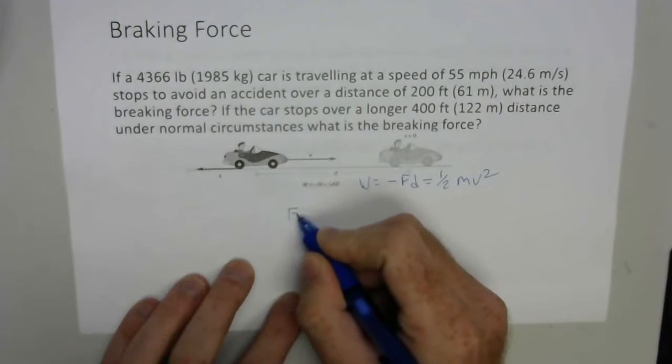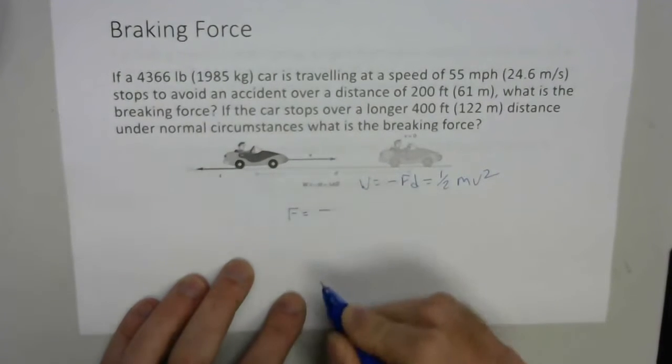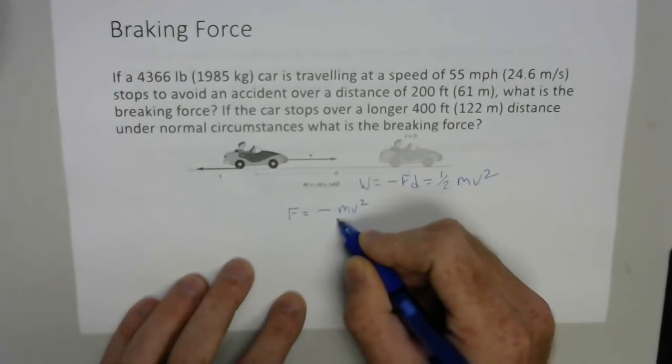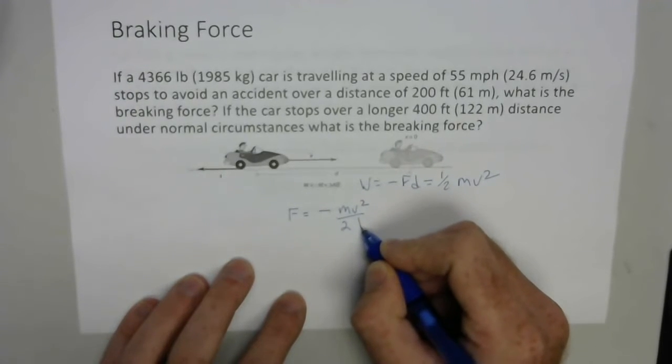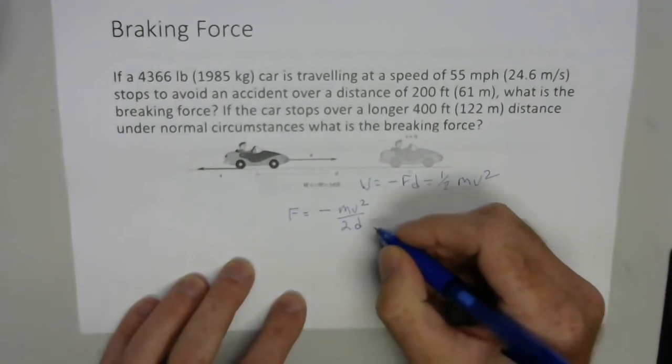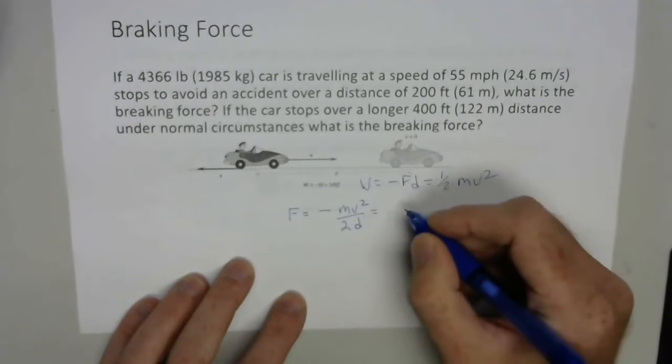So in this case, the force is going to be equal to negative mv squared over 2d. I'm just taking the one-half and just moving the two to the denominator with the d. Then it's just plug and chug.